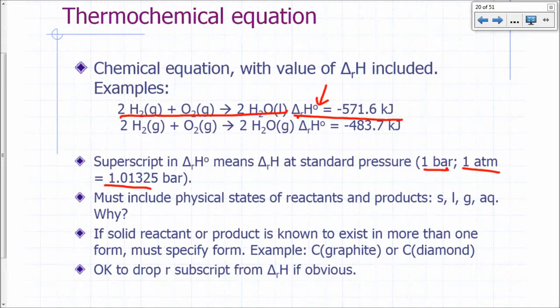Most freshman chemistry textbooks still use one atmosphere as standard pressure, but the modern standard pressure is one bar. So if you see that superscript zero next to the delta H, that simply means you're dealing with a process where the constant pressure happens to be one bar or one atmosphere.